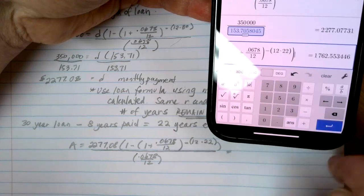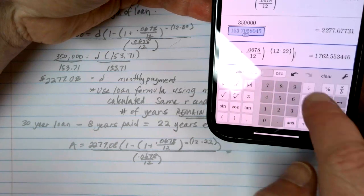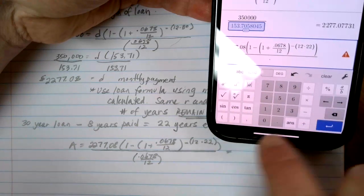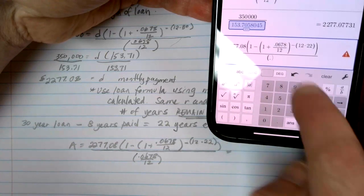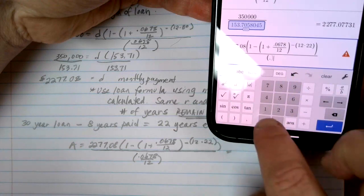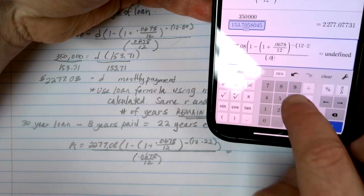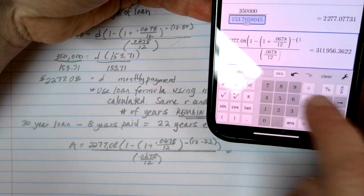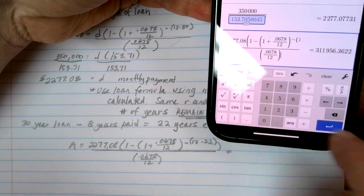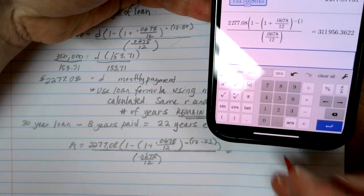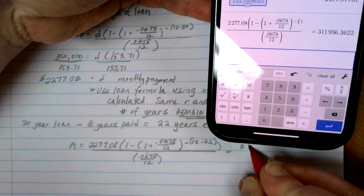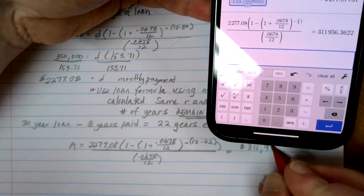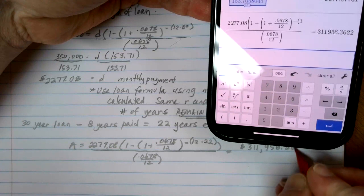And then bring that parentheses down to the main level. And then we want to divide the whole expression here by 0.0678. Oh, it needs to be in parentheses. 0.0678 divided by 12. Close the parentheses. And I'll have my answer here. So after eight years, I'm going to owe $311,956.36.